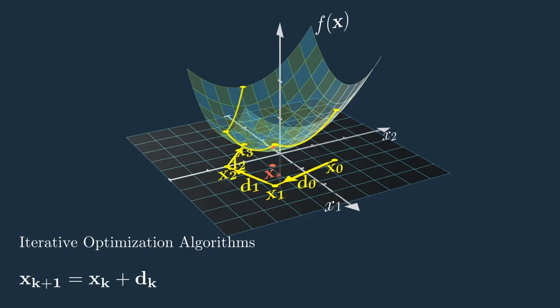At iteration k, I am at some point x_k, I pick a vector d_k, I follow it, I reach x_{k+1}, and I can evaluate f at x_k and x_{k+1} to see how much progress I have made. The crucial question, of course, is: when I am at the point x_k, how can I pick the direction d_k? This is a crucial question because the way you answer it determines which algorithm you're using.